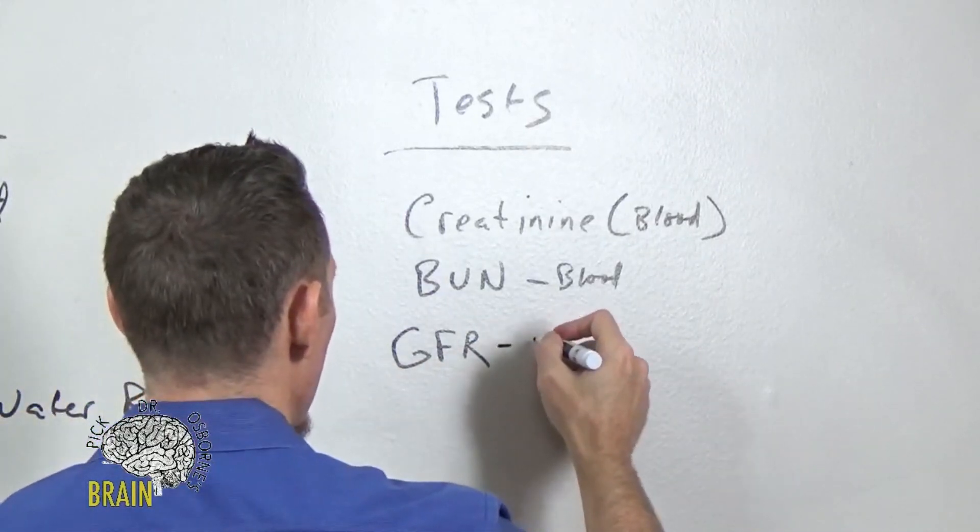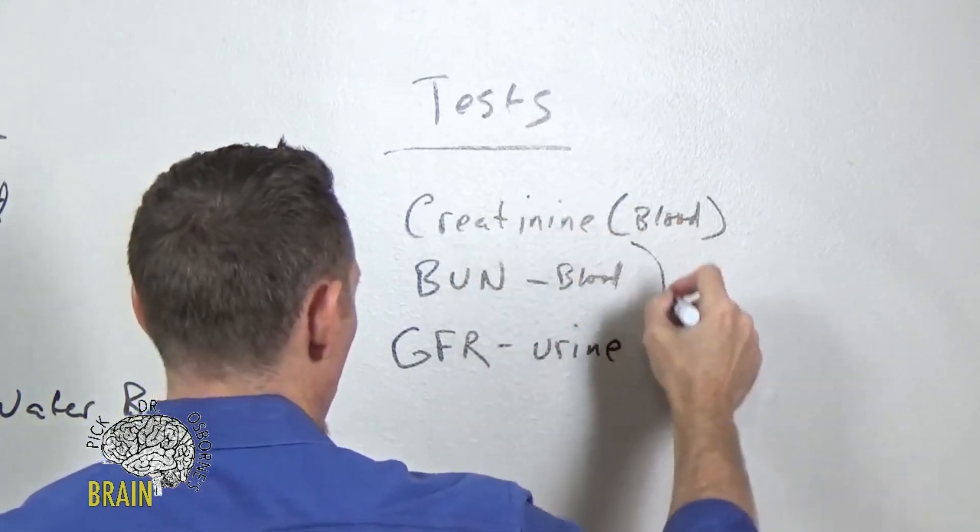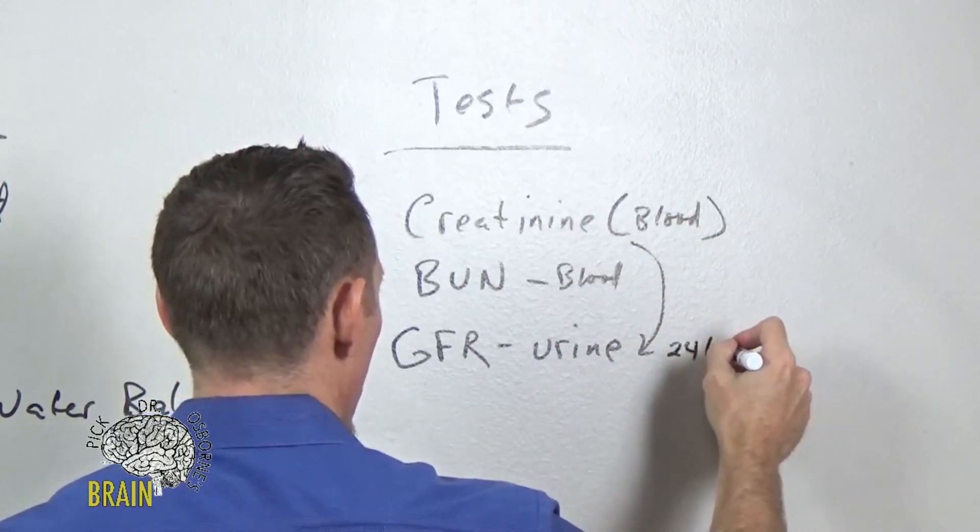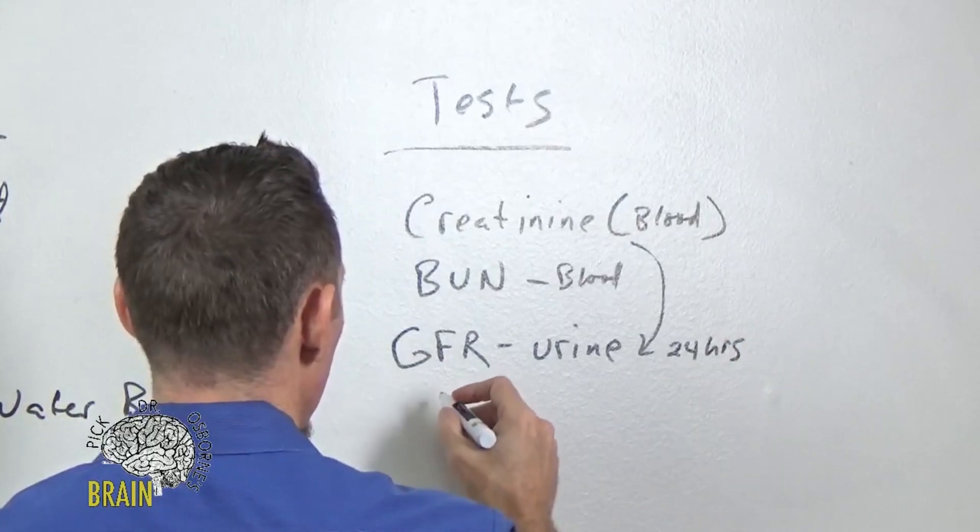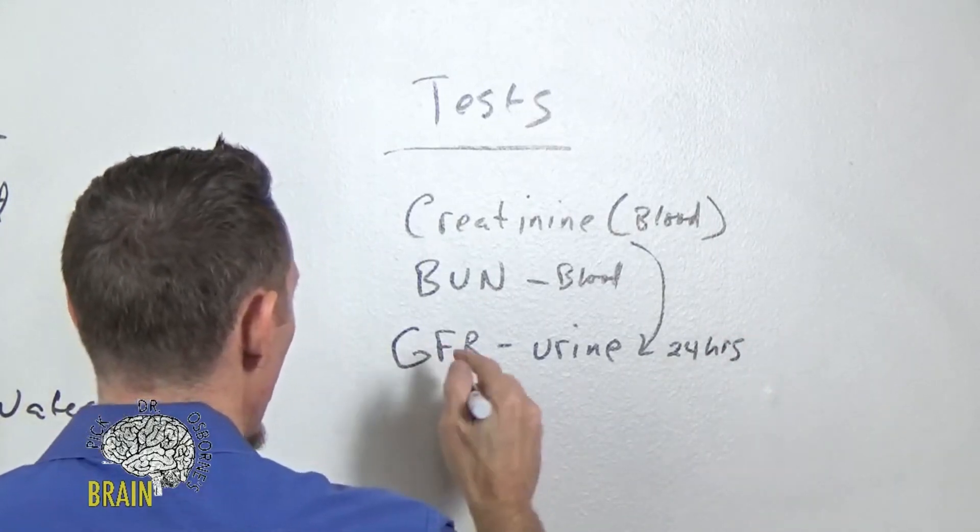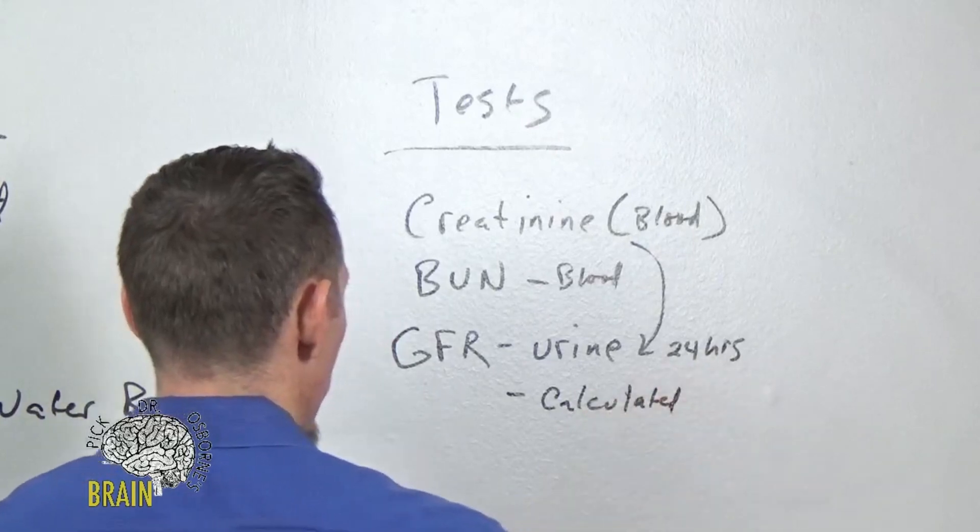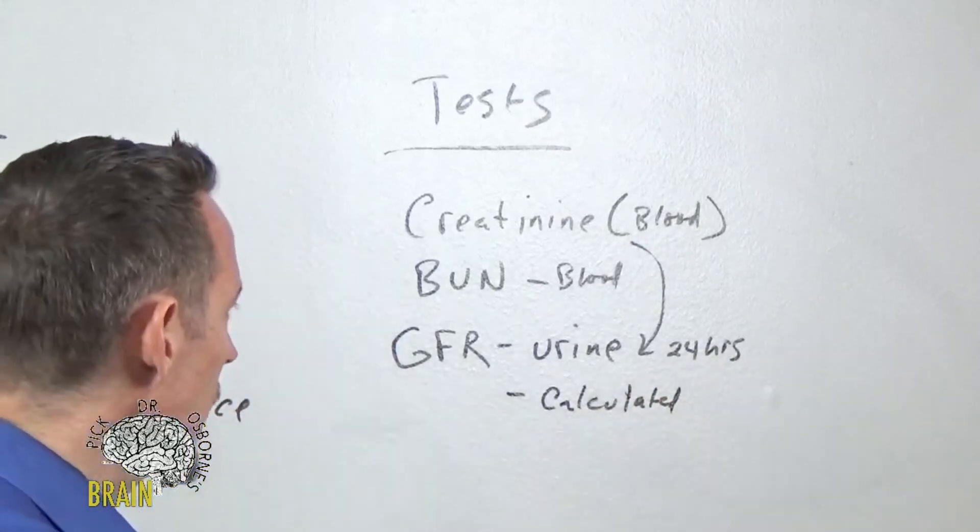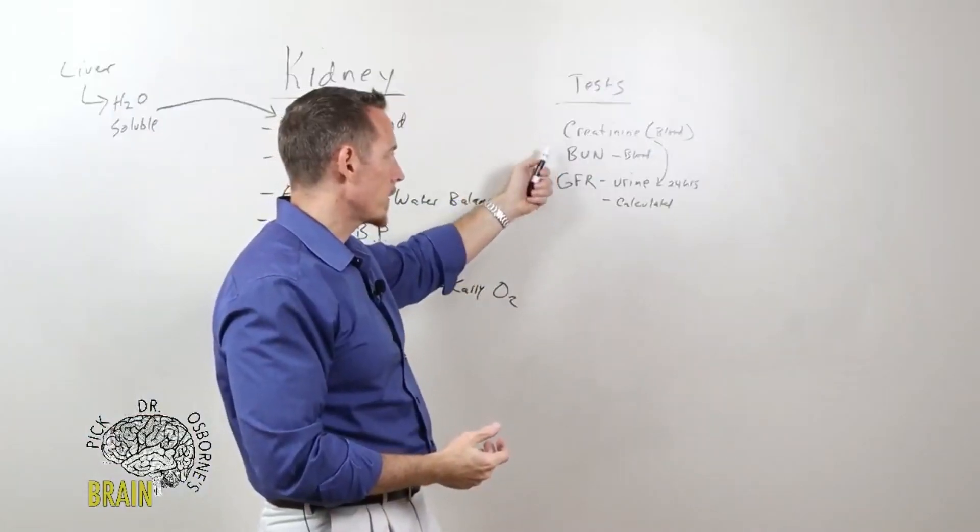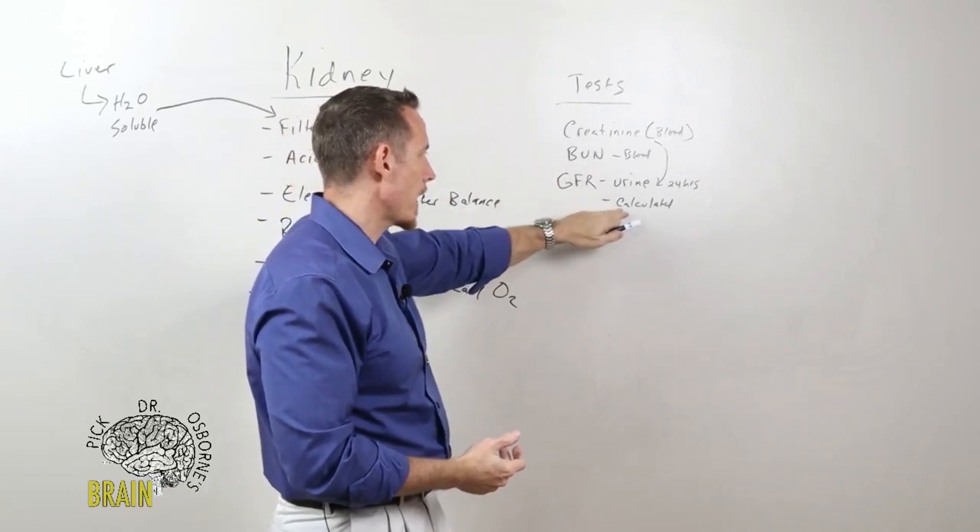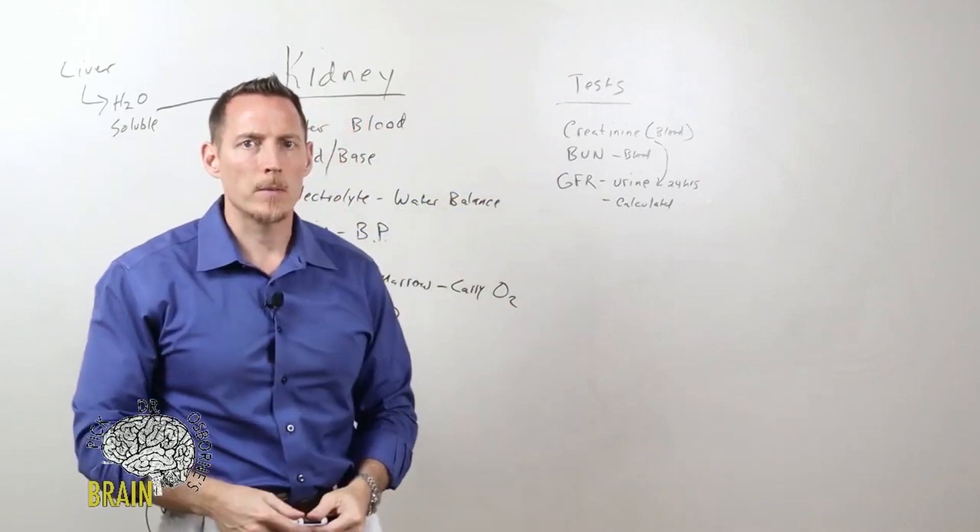You can also do what's called a calculated GFR, which is basically an estimation. Instead of having to pee for 24 hours in a bucket, doctors can run your blood and measure creatinine, and through a formulaic process they can calculate your estimated GFR. So these are predominantly lab tests that many doctors will run.